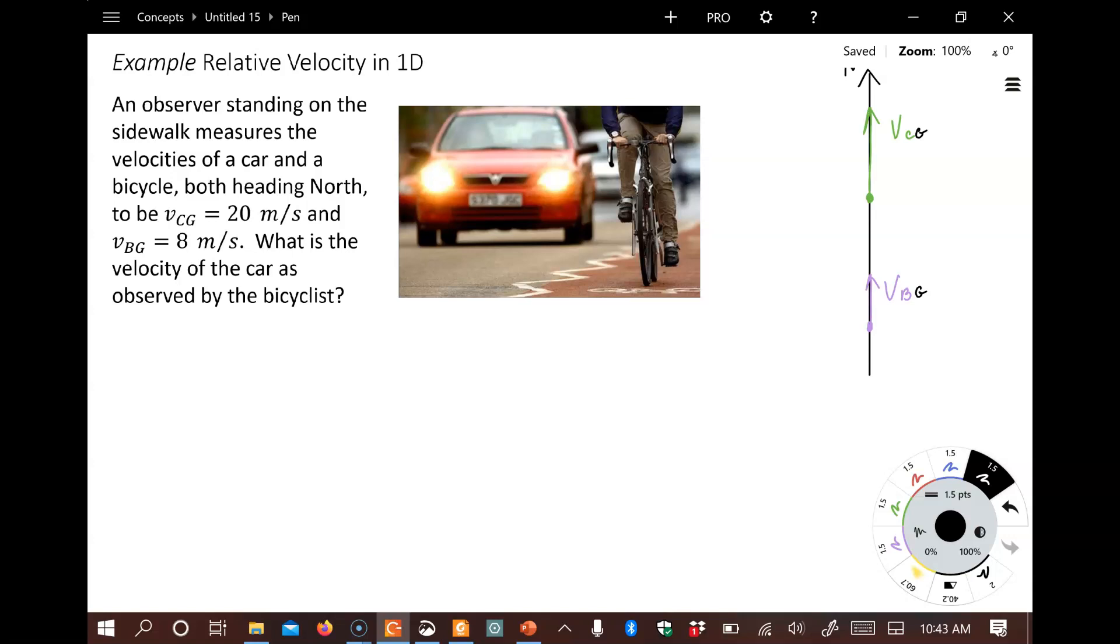Now there's a formal way to relate these things. So what we want to do here is always be aware of the three reference frames that we're dealing with in our problem. In this case, we've got G, that's the ground. We've got C, that's the car, and we've got B, that's the bike.